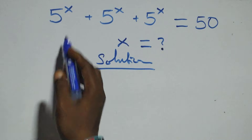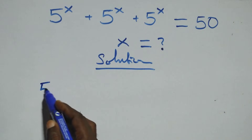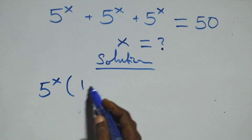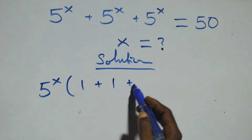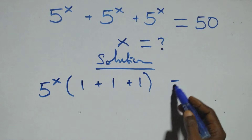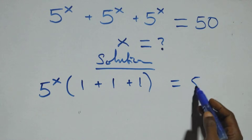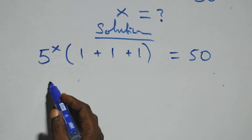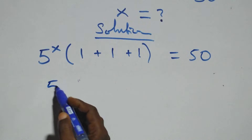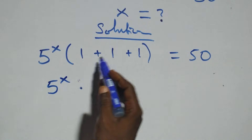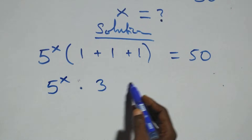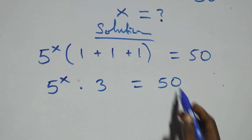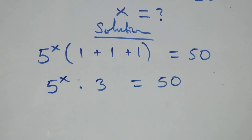We can factor 5 raised to power x out here, and we have 5 raised to power x times bracket 1 plus 1 plus 1 equals 50. This is the same thing as 5 raised to power x times 3 equals 50.